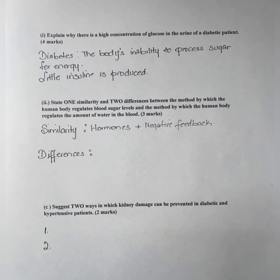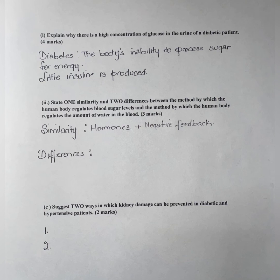For differences, you could talk about the differences in the hormones used. For example, in regulating blood sugar levels, the body uses insulin and glucagon, whereas in regulating the amount of water in the blood, the body uses the antidiuretic hormone, also known as ADH. Apart from the hormones, you could also comment on the differences in the organs in which each method is effected.